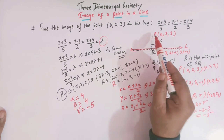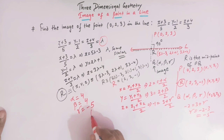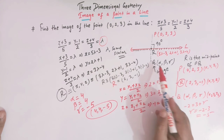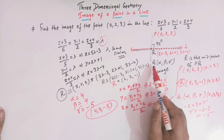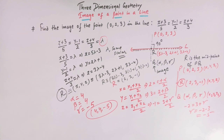So the coordinates of the image of point P with respect to line L are (4, 4, −5). This is the coordinate of image Q. By making use of the concept of direction ratios and the dot product of two perpendicular vectors, we can find the image of a point with respect to a given line.